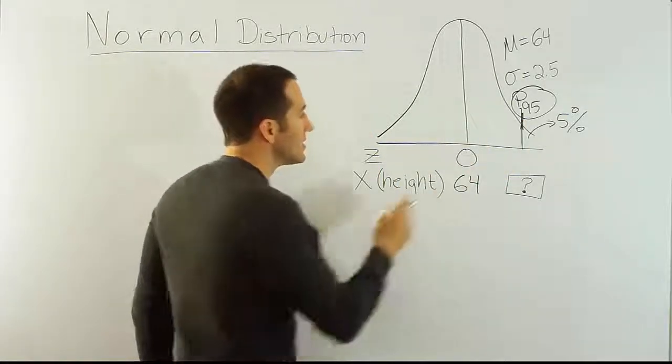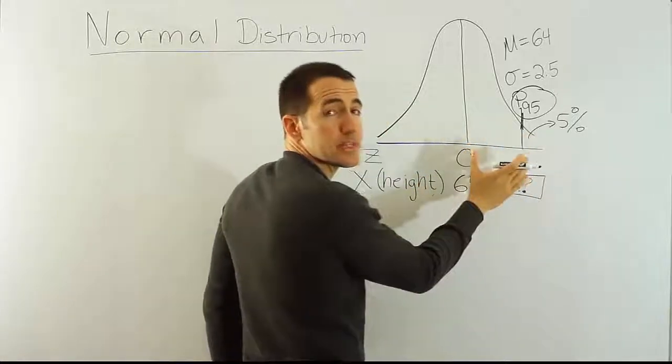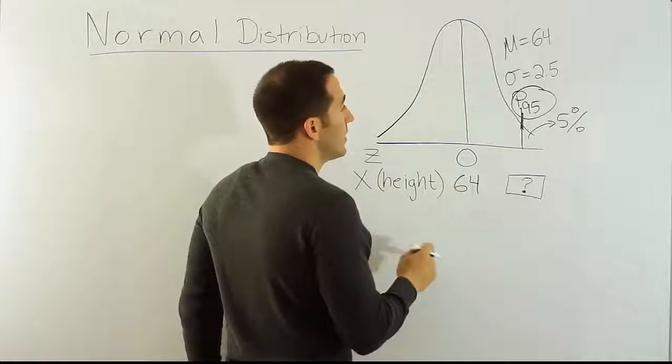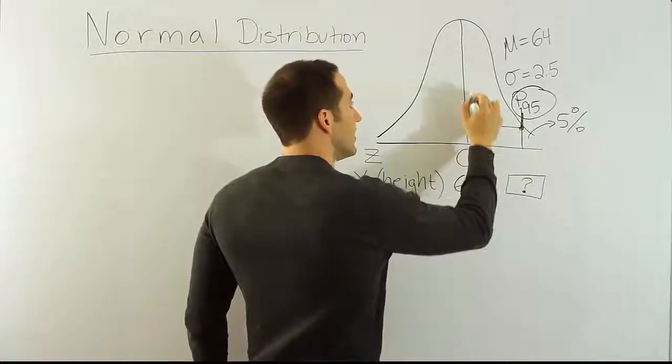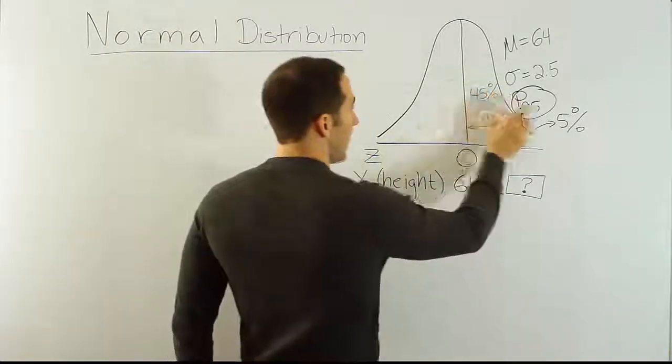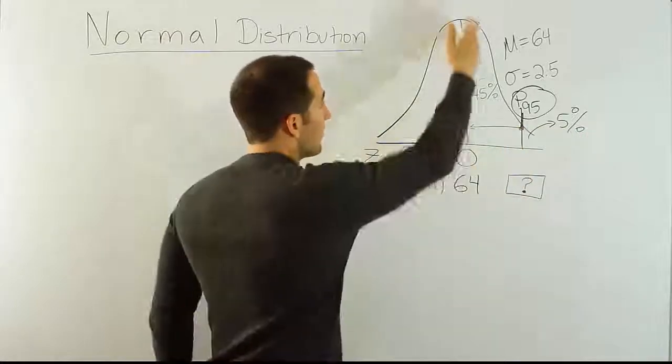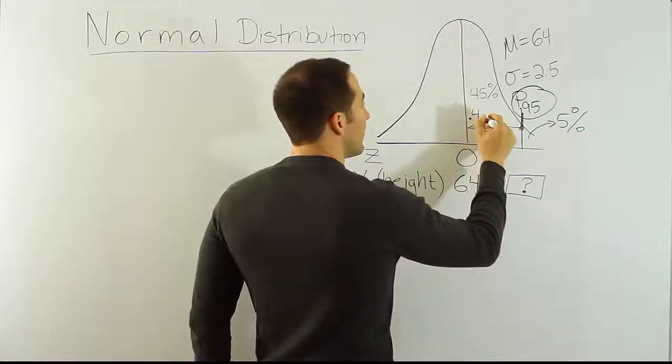And in fact, since this part of the curve from the 0 here all the way over is 50% of the area on the bell curve, I also know that from this particular line to the center is 45%. I know that has to be true because together 45 and 5 makes 50 and that's half the curve. And then I can write that as a decimal as 0.4500.